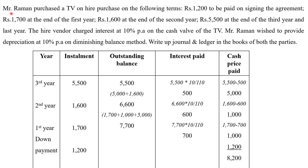This is the question I have taken. Mr. Raman purchased a TV on hire purchase on the following terms: ₹1,200 to be paid on signing the agreement, ₹1,700 at the end of the first year, ₹1,600 at the end of the second year, and ₹5,500 at the end of the third and last year. The hire vendor charged interest at 10% per annum on the cash value of the TV. Mr. Raman wished to provide depreciation at 10% per annum on the diminishing balance method.